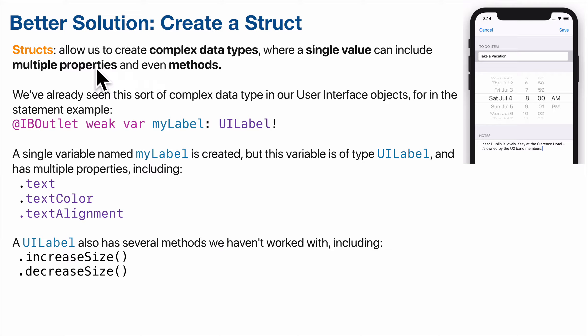Structs allow us to create complex data types where a single value can include multiple properties and even methods. So instead of having three separate arrays of variables, we're going to create a struct that has three different properties. You've seen something similar before — when you create an IBOutlet like myLabel of type UILabel, that UILabel type has properties like text, text color, and text alignment. Now UILabel is actually a class instead of a struct, but the concepts are very similar.